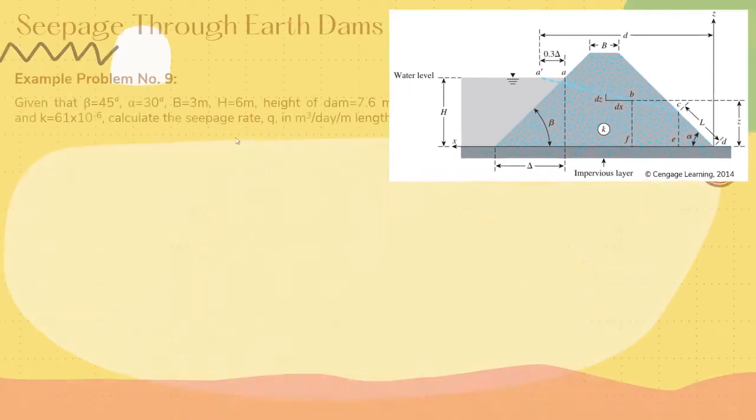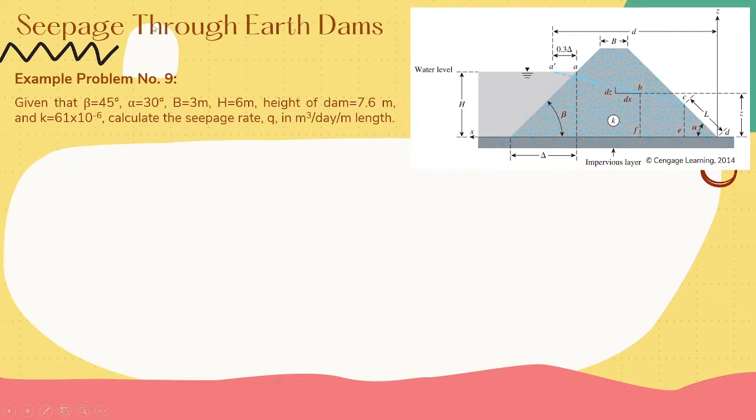Let's have an example problem. Given that beta is 45 degrees, alpha is 30 degrees, b is 3 meters, h or the depth of the water at the upstream side is 6 meters, the height of the dam is 7.6 meters, and k equals 61 times 10 raised to negative 6. Calculate the seepage ratio in cubic meters per day per meter length.